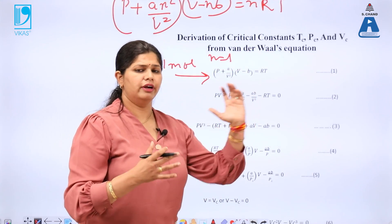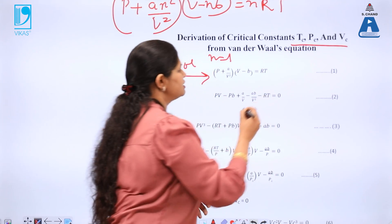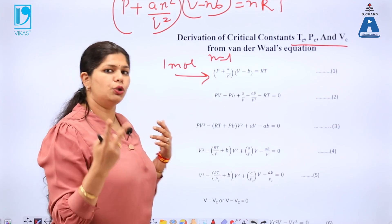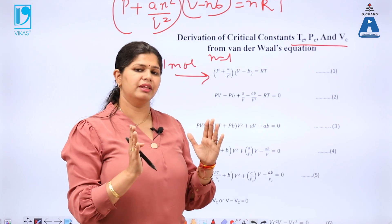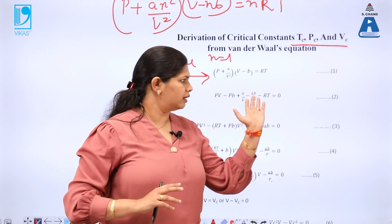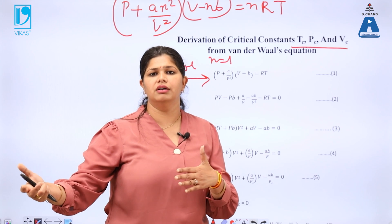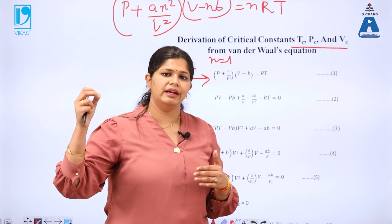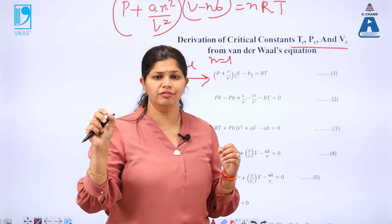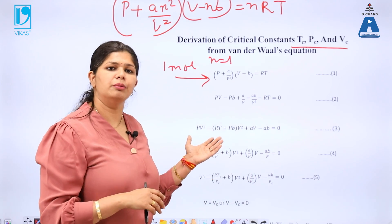Mainly what we are doing is establishing a relationship between Tc, Pc, and Vc from the Van der Waals equation of state. There are two methods: the first is an algebraic method by solving the Van der Waals equation and deriving the expression; the second is finding the minima of the Andrews isotherm curve and putting it into the equation. We will cover both types.